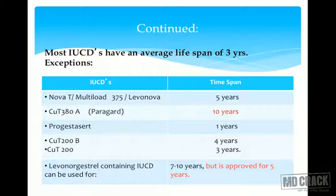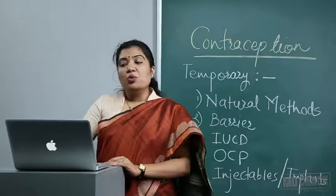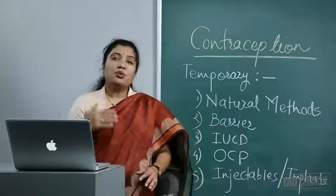Copper T 200B has a lifespan of four years in the US and three years for those manufactured in India. Progesterone-containing IUCDs have a life of seven to ten years but are approved for five years.